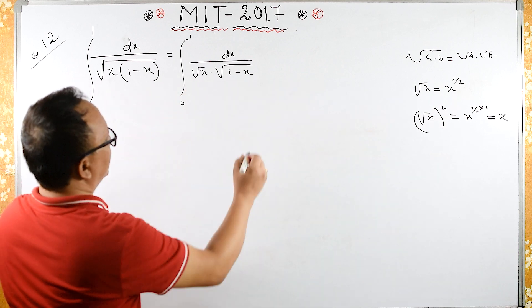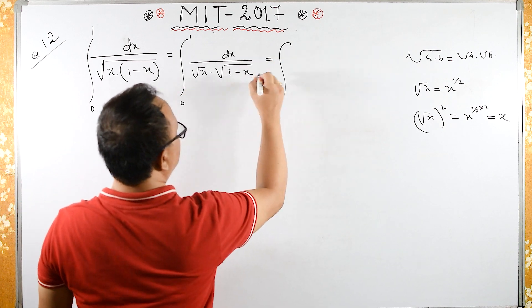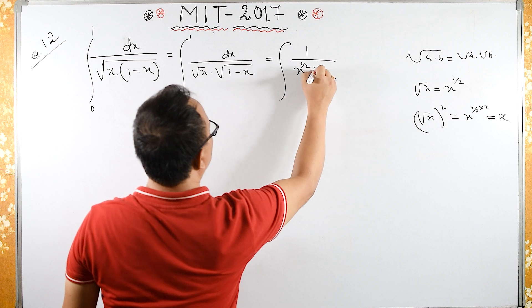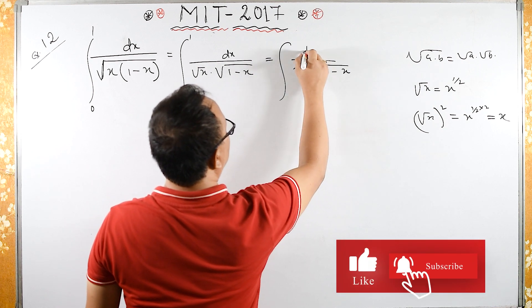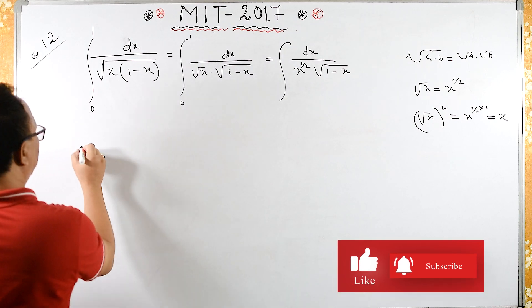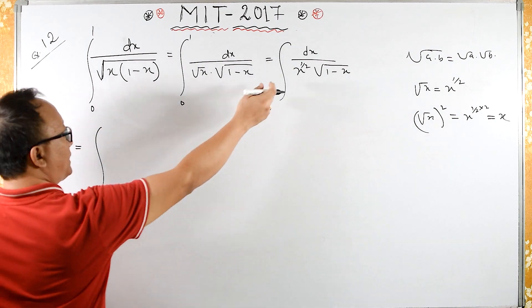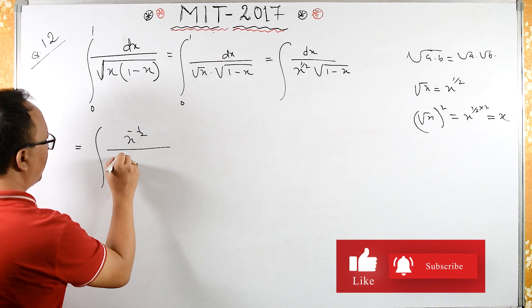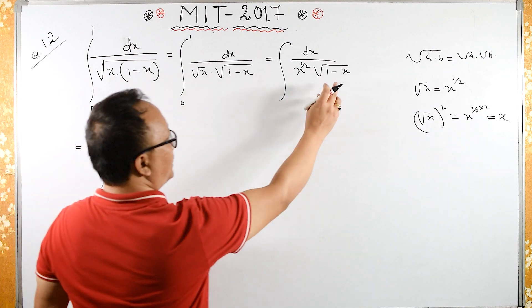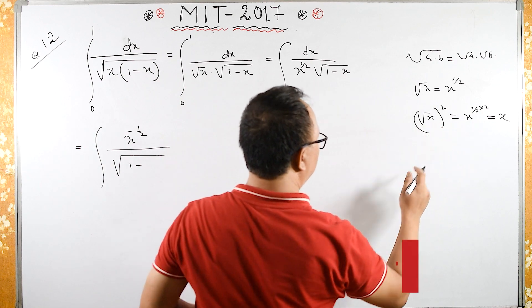So I can write this as 1 upon x raised to half, square root of 1 minus x dx. This half I can bring up, so x raised to minus half upon square root of 1 minus x squared.